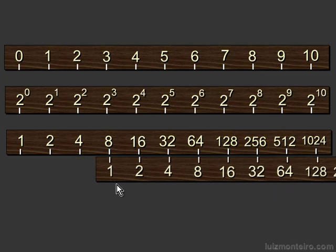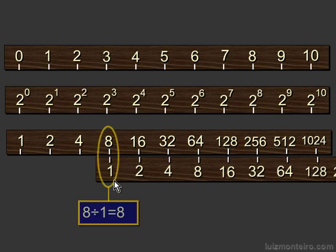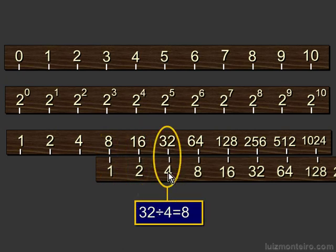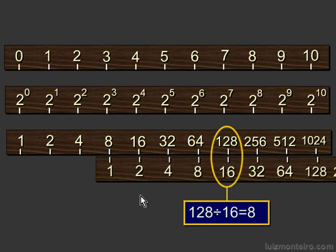Now I'm going to move the ruler underneath the 8 so that the 1 is underneath the 8. We have 8 divided by 1 equals 8, 16 divided by 2 equals 8, 32 divided by 4 equals 8, and so on.